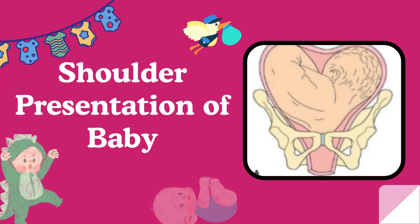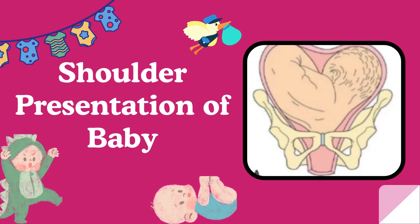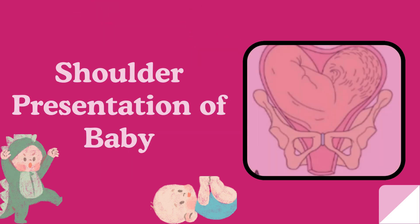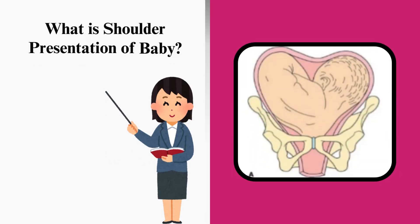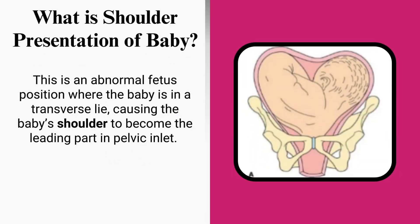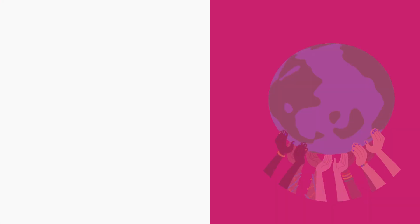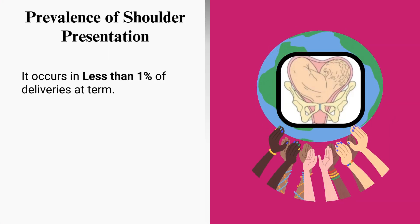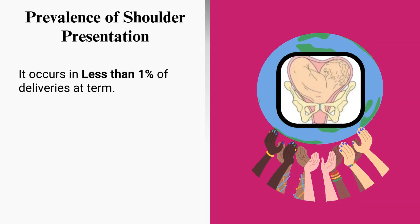In this video, we will talk about an important complication of pregnancy: the shoulder presentation of a baby. This is an abnormal fetal position where the baby is in a transverse lie, causing the baby's shoulder to become the leading part in the pelvic inlet.